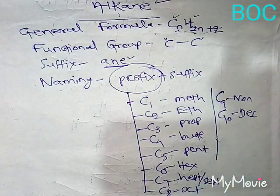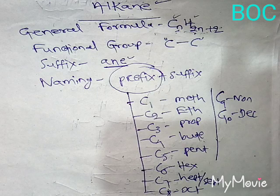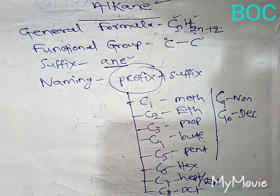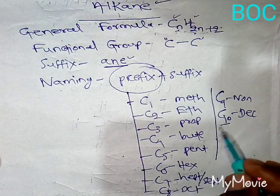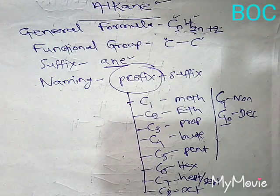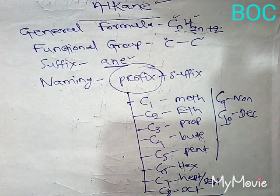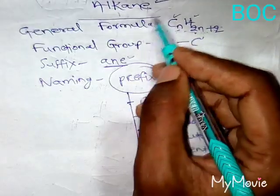For higher numbers of carbons, prefixes like undec, dodec, and so on are used. But for now, we need to know the basics up to carbon number 10. So the prefixes are: meth, eth, prop, but, pent, hex, hept, oct, non, dec. Let's now come into this group, that is, the alkane chain.